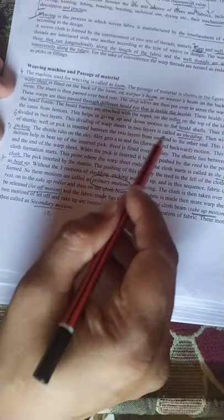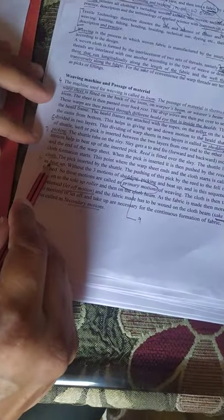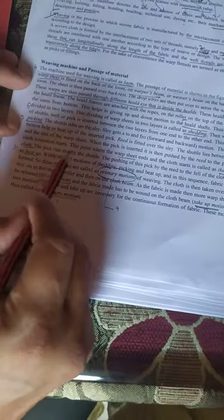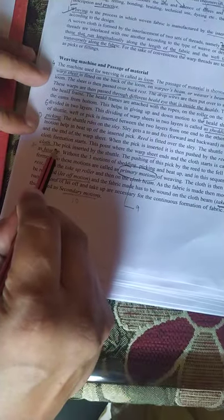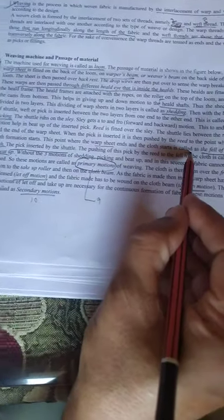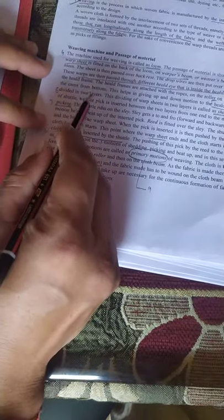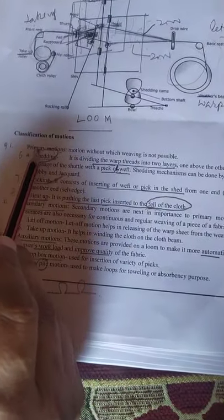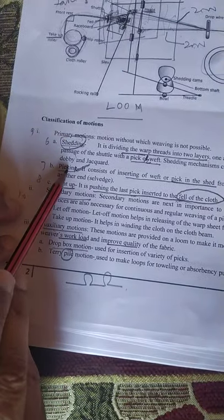Beat up is pushing up of the pick inserted to the fell of the cloth. These three types of motions are called primary motions. Name different primary motions: shedding, picking, beat up.